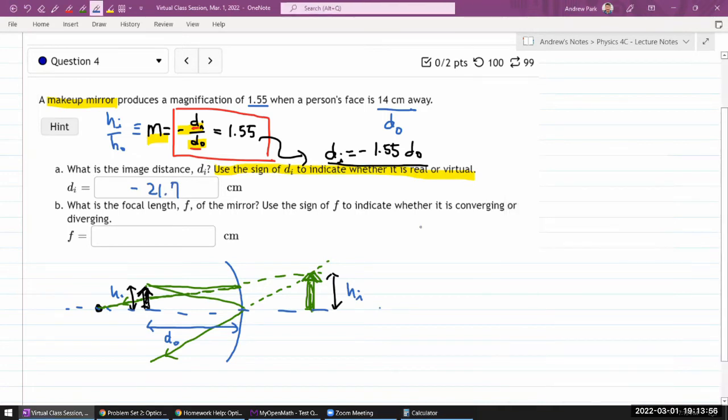If the question was instead asking me how far away is the image from the mirror, I might have given the answer as an absolute value quantity. So I'm looking at the question instructions to see which way the question wants me to answer.